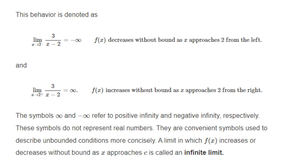We denote it as follows: the limit as x tends to 2 from the left of 3 over x minus 2 is minus infinity, meaning f of x decreases without bound as x approaches 2 from the left. And the limit as x tends to 2 from the right of 3 over x minus 2 is infinity, meaning f of x increases without bound as x approaches 2 from the right. The symbols plus and minus infinity refer to positive and negative infinity, but they don't represent real numbers — infinity is not a real number; it is a limit of real numbers. They are convenient symbols used to describe unbounded conditions more concisely. A limit in which f of x increases or decreases without bound as x approaches c is called an infinite limit.